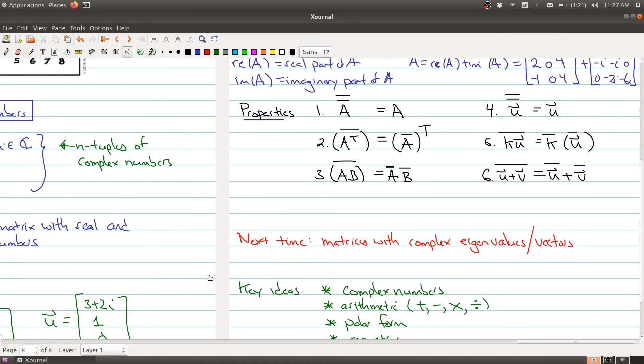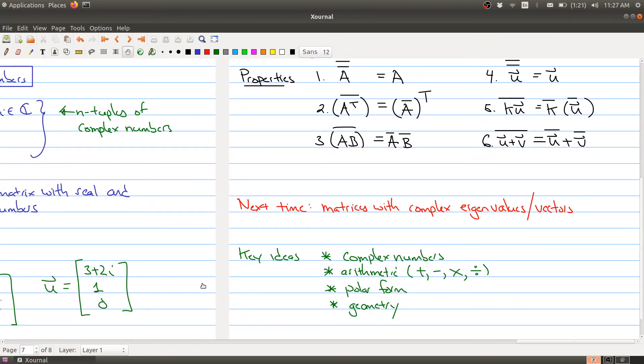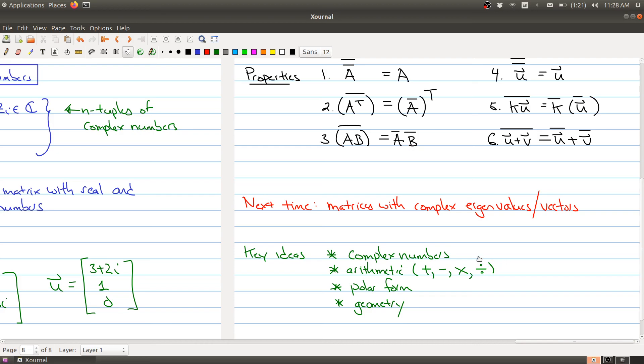So today was kind of like a whirlwind discussion of complex numbers. I realize that there are a lot of things going on. And hopefully I partially motivated why we want to do this. So next time we want to talk about matrices with complex eigenvalues and eigenvectors to explain kind of what they mean. And there's a bunch of key ideas from today's lecture that you should internalize. You should know what a complex number is. You should be comfortable with the basic arithmetic of addition, subtraction, multiplication, and division. You should know the polar form, and be comfortable with some of the geometry involved. So I hope you enjoyed today's lecture, and we'll be moving back to Chapter 5 in the next lecture.